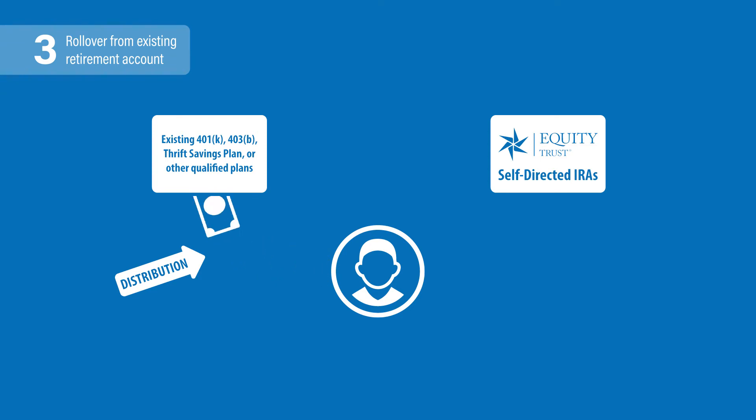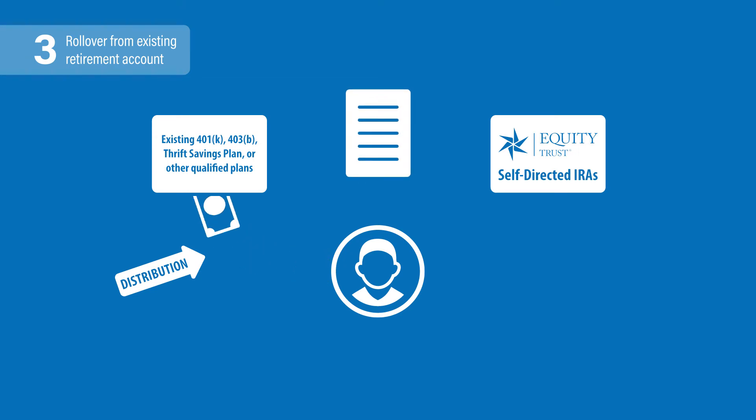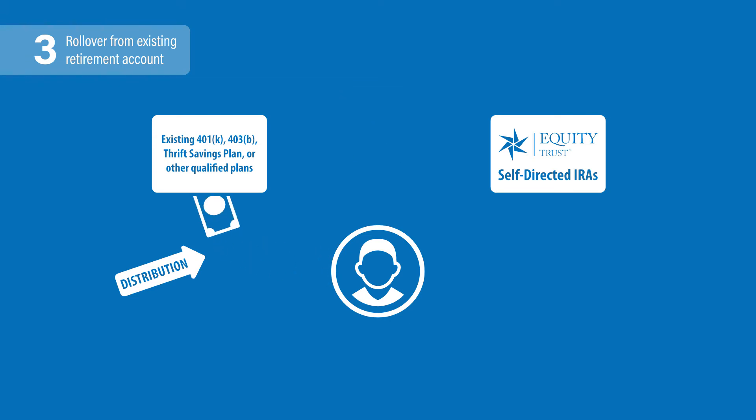This process is started by requesting a rollover from your previous employer or current plan administrator, along with instructions to send the funds to Equity Trust. Your current plan administrator will provide the documentation needed to process your request. After receiving the distribution, the account owner has 60 days to deposit or rollover the funds into a new account. It may be possible to request a direct rollover, where your plan administrator makes the payment directly to your new account.